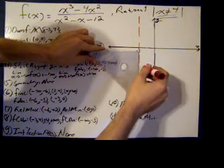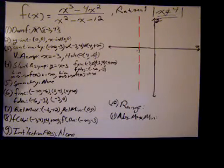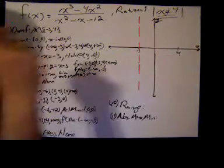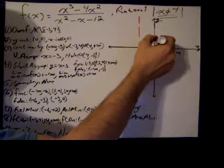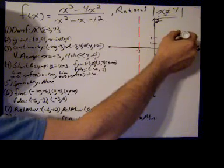Another thing, we had a hole at 4, 16 sevenths. So at x equals 4, and that's, let's call this 1, we'll call this 2, so about a little bit over 2, about right there we have a hole.